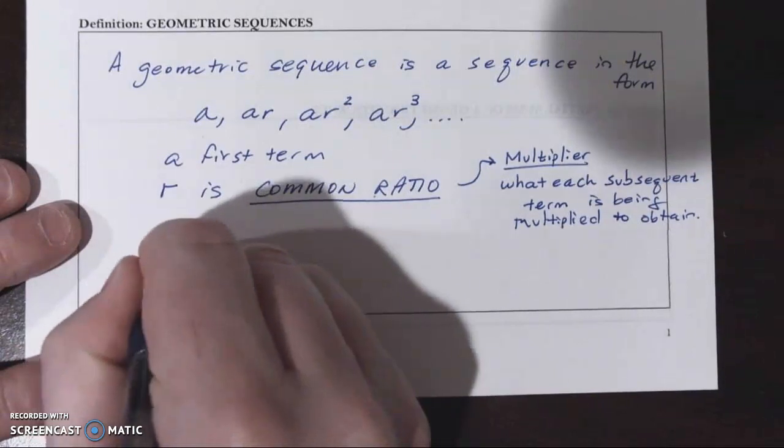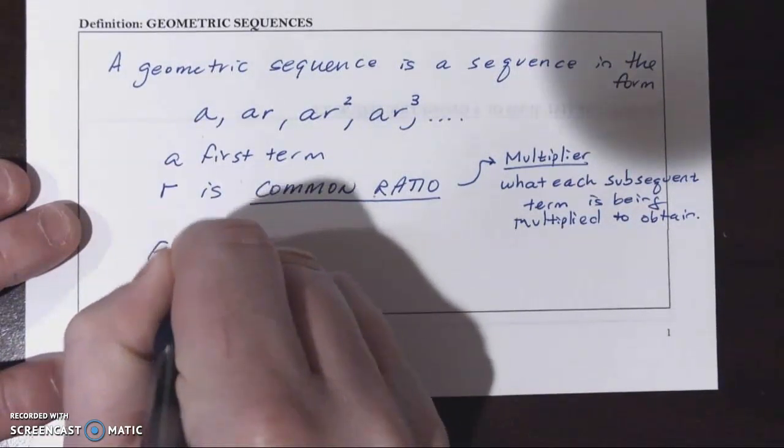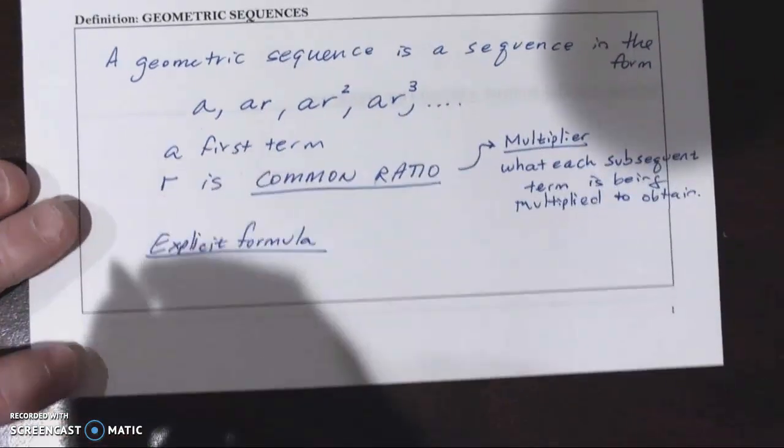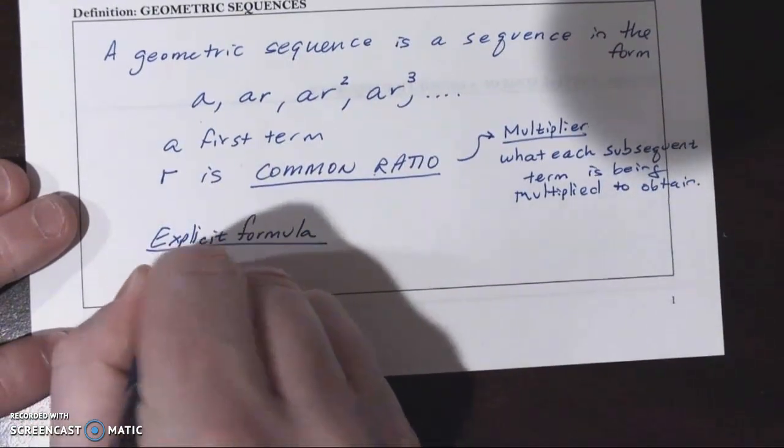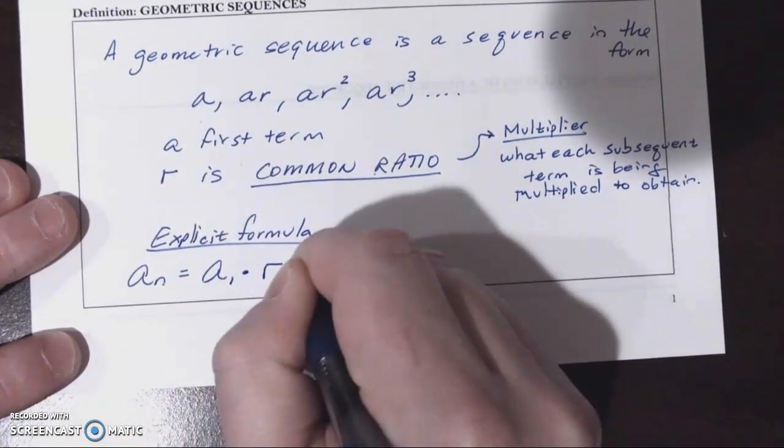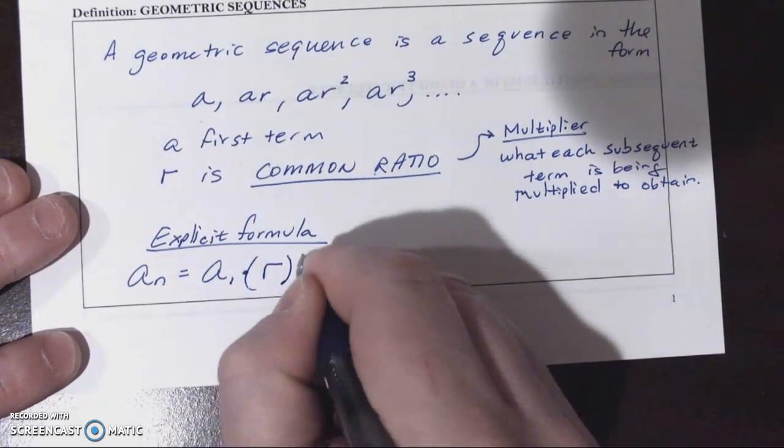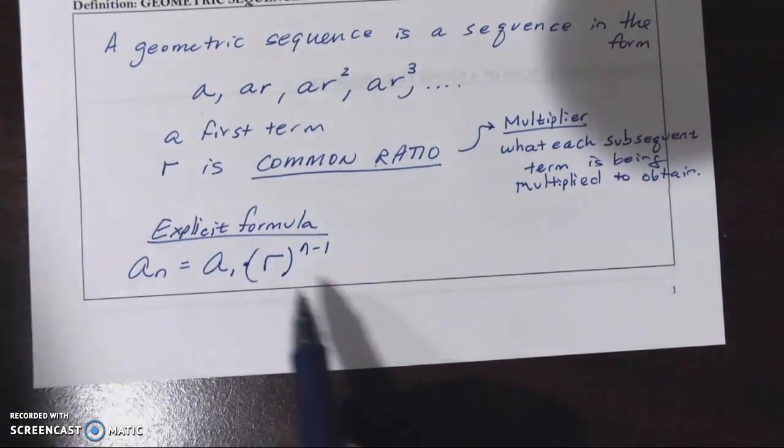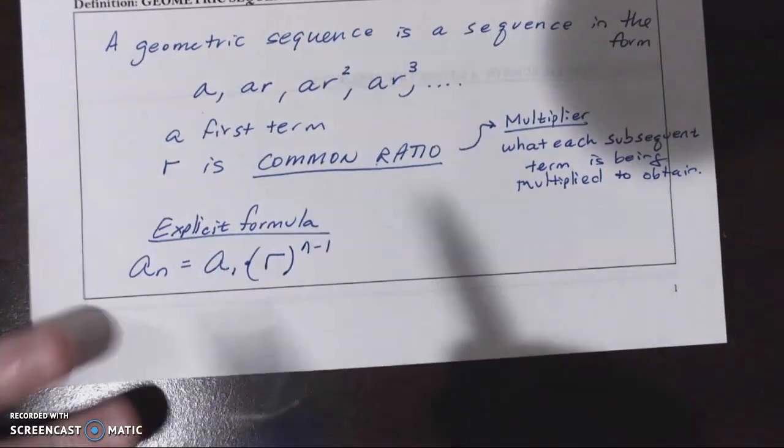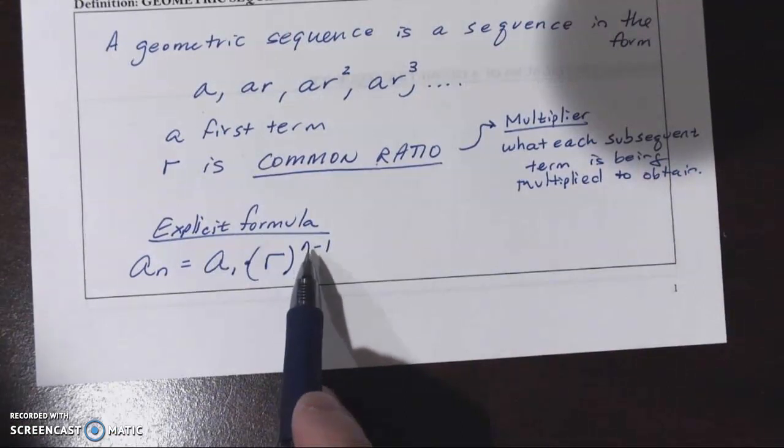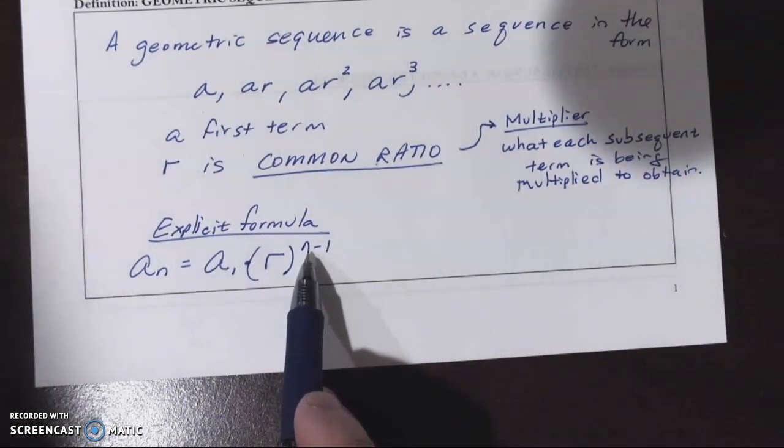So the explicit formula for the Nth term of a geometric sequence is the first term times the common ratio to the N minus one power. And it makes a lot of sense because if we have the first term, when we start multiplying to get future terms, this N minus one very simply means how many times are we multiplying it.